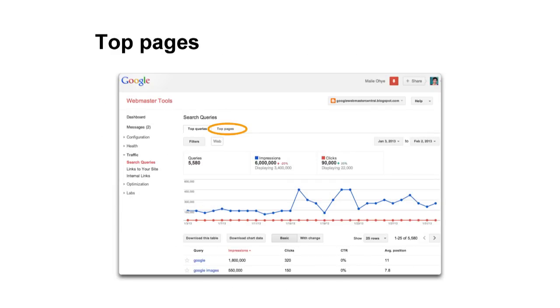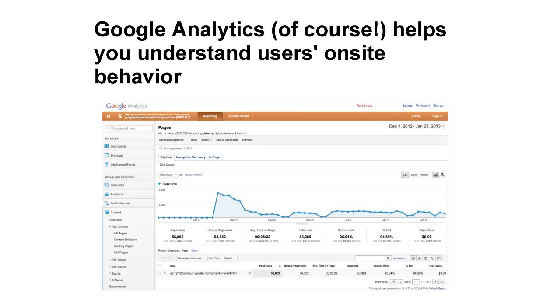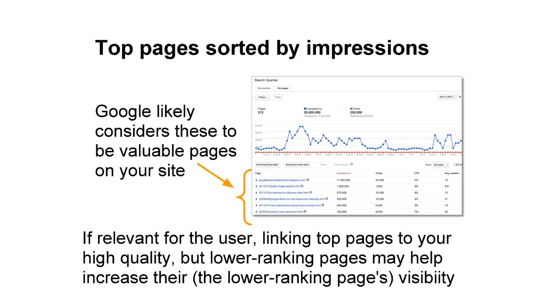Back at the main search queries page, let's now check out the top pages tab. If you sort your top pages by clicks, you can see that for a given date range, these are the pages most visited by searchers. You'll want to investigate these pages to make sure that they're clear, well written, and provide an easy way for a visitor to further navigate your site, buy your product, or otherwise convert. You can gain a better sense of what users are doing on these pages through Google Analytics. You can also sort top pages by impressions — because these pages are often shown to users in search results, it's likely that Google considers them relevant pages. Given that these top pages are valuable from a search engine perspective, you can use them to link to your high-quality but lower-ranking or less-featured pages for more visibility for users and search engines.